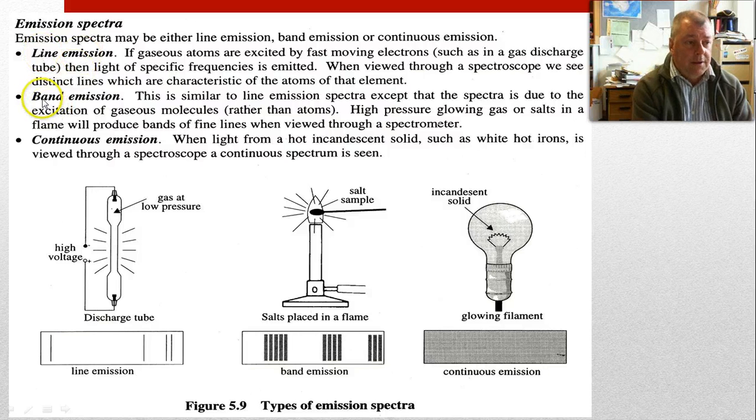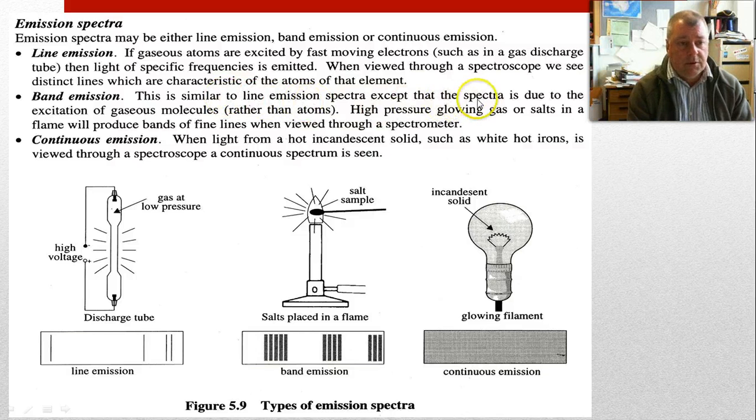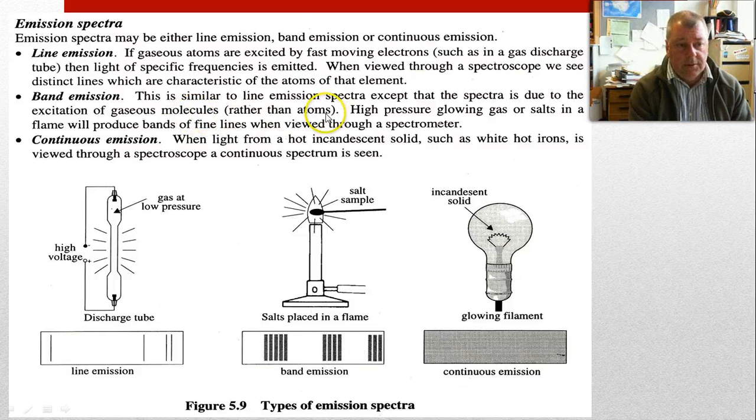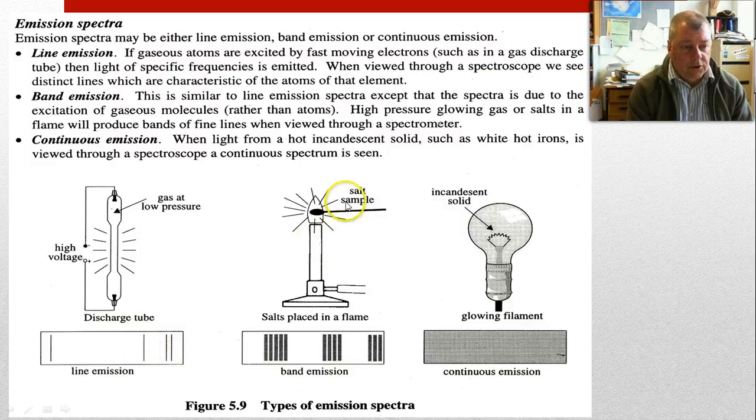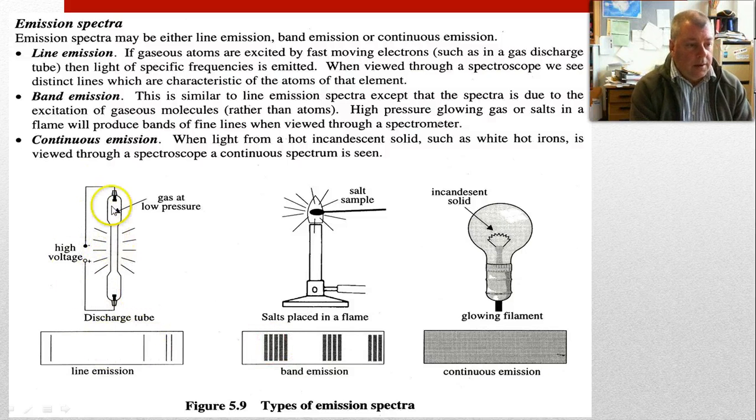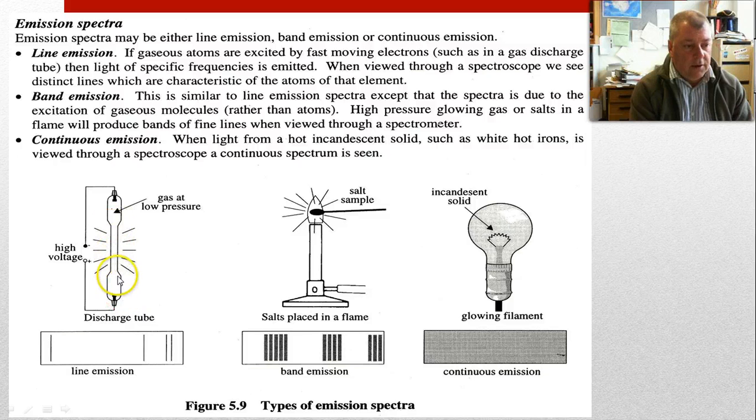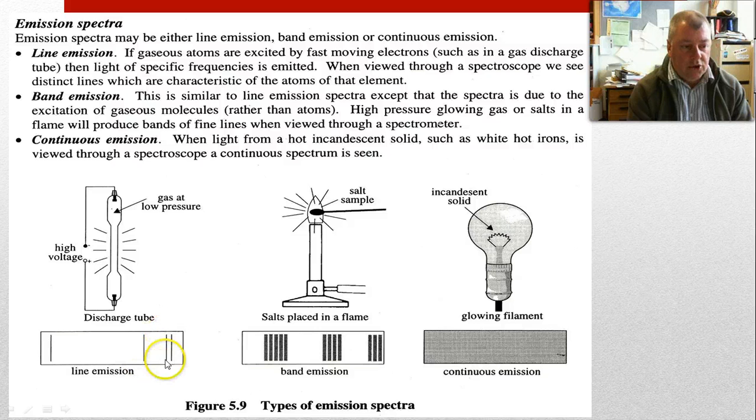Here they call it line emission, but they introduce another term called band emission. This is similar to the line emission spectrum, except the spectrum is due to excitement of gas molecules rather than atoms, and you get fuzzy lines rather than sharp lines. Usually when you put a salt inside a flame and look at the spectrum. That's a gas discharge tube. Basically it's evacuated. A little bit of gas of interest is put in there and then electrons are streamed at high voltage from one end to the other. They have collisions and interactions with the atoms causing excitement and you get emission, so you get a line emission spectrum. From white light you get a continuous spectrum.